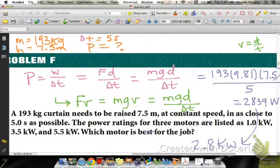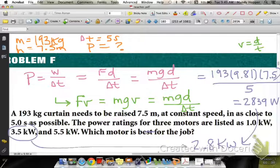That is 2.8 kilowatts so which of those works the best? You got to go if you want your curtain to do that you have to go with a motor that is going to be slightly more powerful than what you need. There's no sense in overdoing it. The higher the power rating the more expensive the motor so go with what you need.